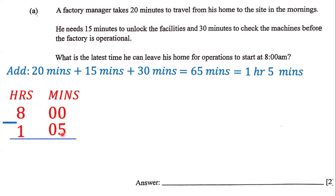Zero minus five — we can't do that. So we have to go over and see if we could borrow from the zero, but we cannot borrow from the zero because it's just zero. And so we have to move over to the hour side and see if we can borrow. Sure enough, we can. So we're going to borrow one hour from eight.